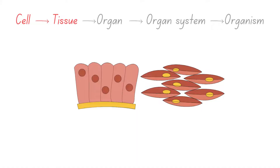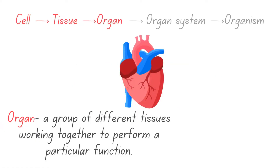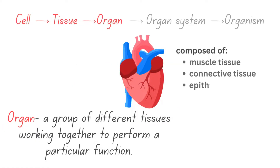When different types of tissues group together, they form an organ. Each organ has a specific function in the body, and it's made up of multiple tissues that work in harmony. Take the heart, for example. It's an organ composed of muscle tissue, connective tissue, and epithelial tissue, all working together to pump blood throughout the body.